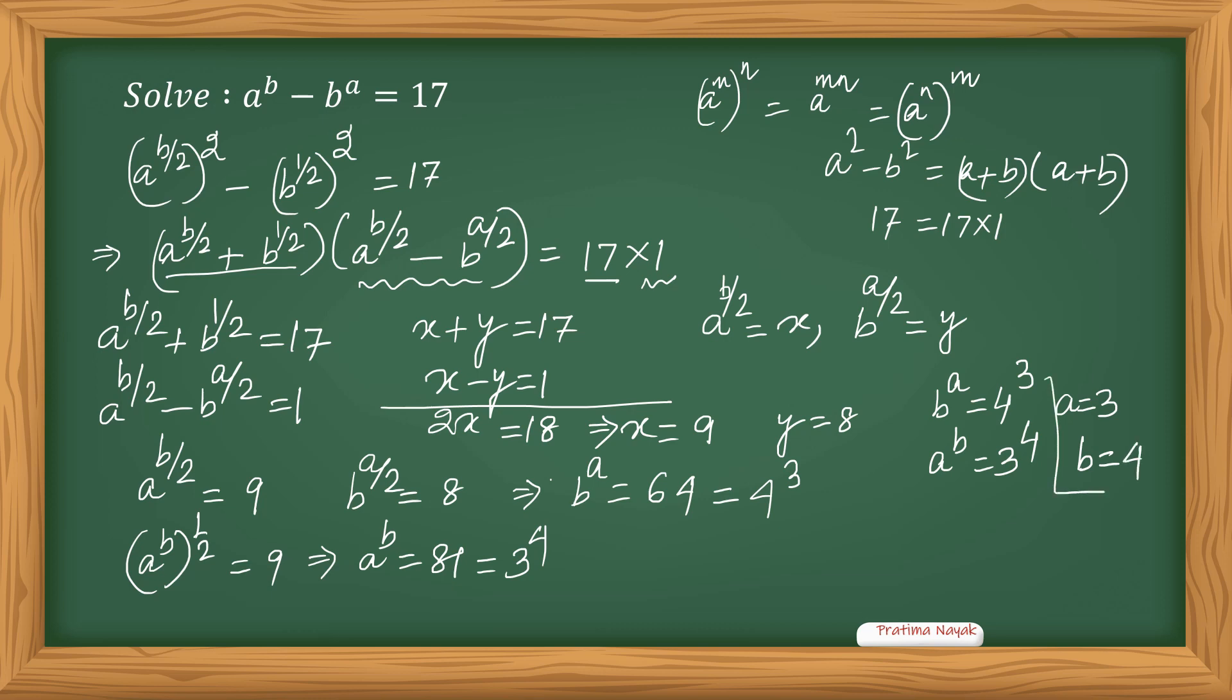But what is b and a? We are getting a equals 3, b equals 4 is the answer of this.